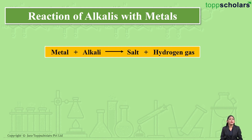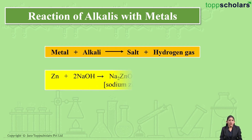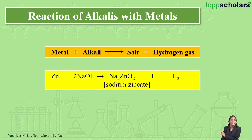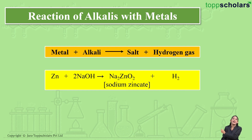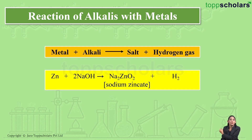Let's take an example to understand this. Here I have zinc metal which reacts with sodium hydroxide, which is an alkali, resulting in the formation of salt along with the liberation of hydrogen gas. The salt which is formed in this case is Na₂ZnO₂, which is nothing but sodium zincate.